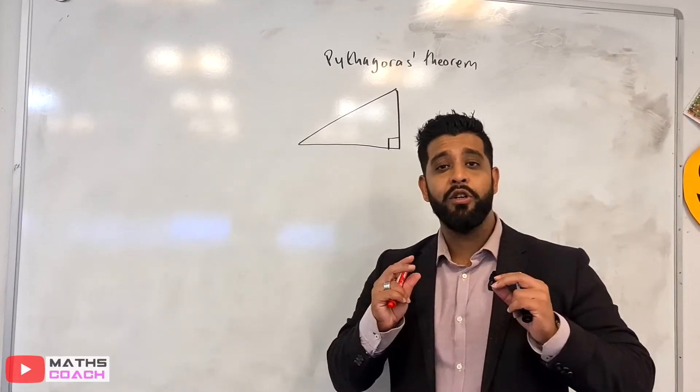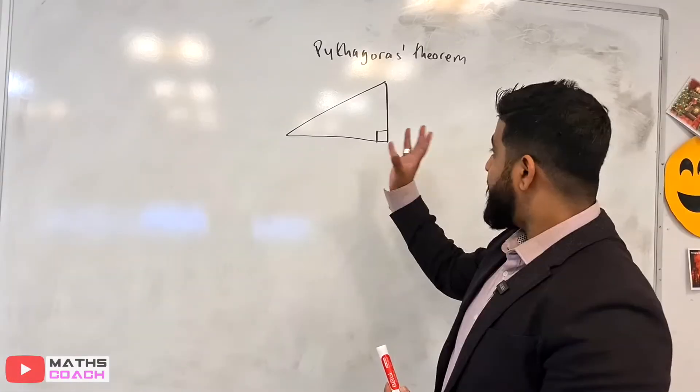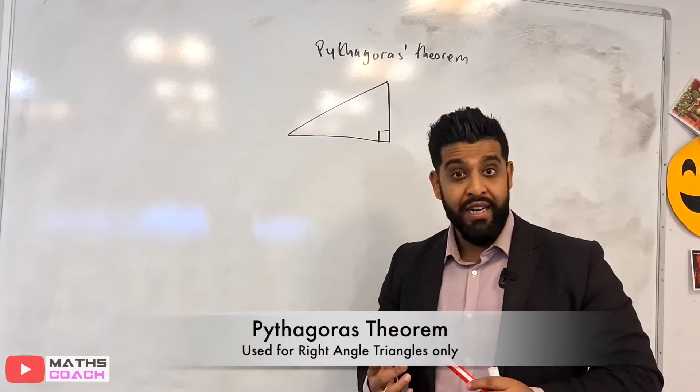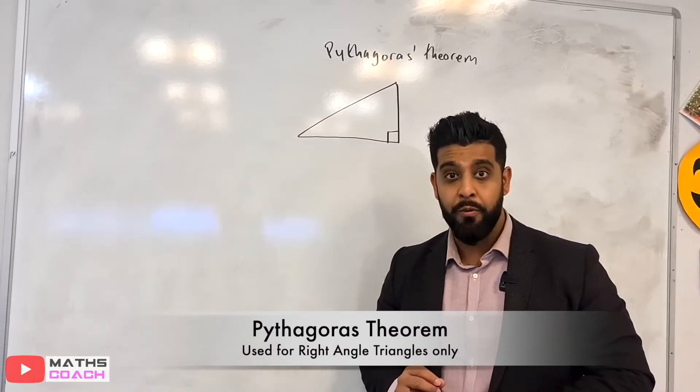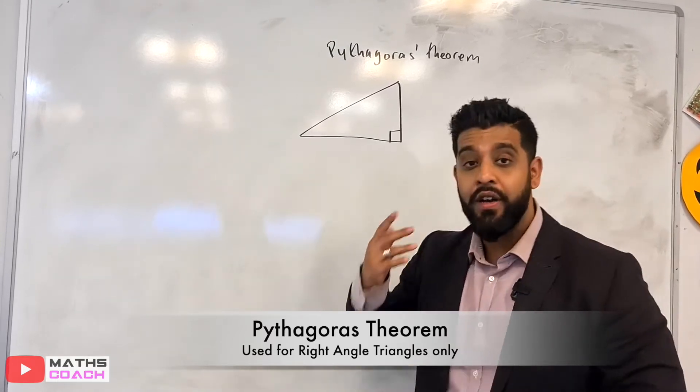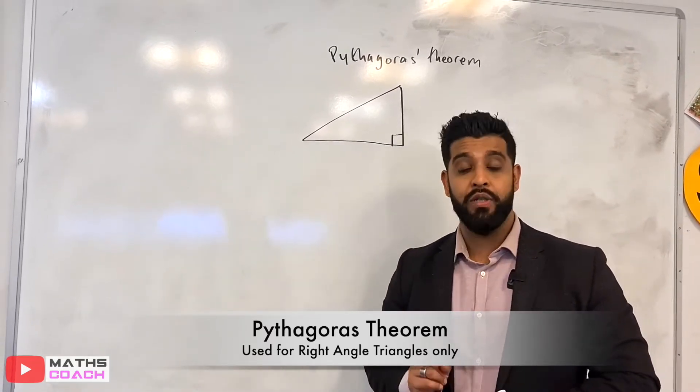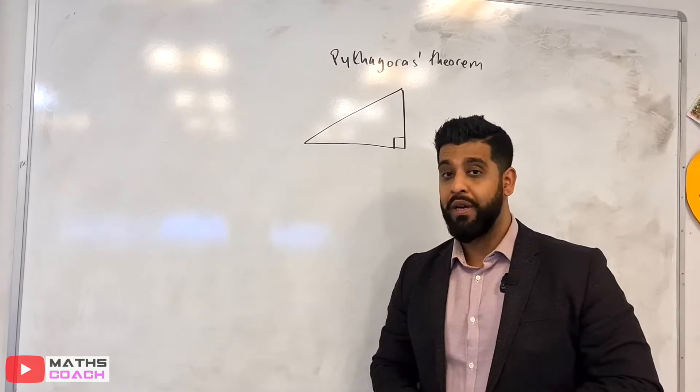Hi guys, so in this lesson I am going to go through Pythagoras' theorem. Pythagoras' theorem works with right angle triangles only. So whenever you are given a right angle triangle and you are told to find the third side after being given two sides, then you know that you need to use Pythagoras' theorem.